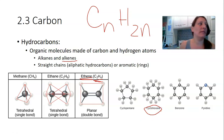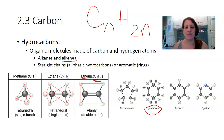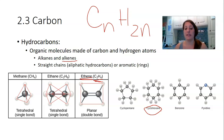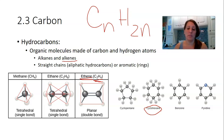Hydrocarbons can also exist in cyclical structures, and in lab you'll draw cyclohexane. Straight-chain hydrocarbons are not very stable in aqueous environments, so they will often form a ring structure. Glucose is a great example of a linear molecule that's not stable and so forms a ring.